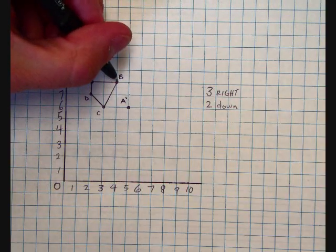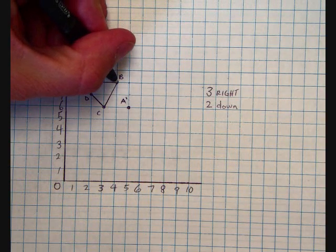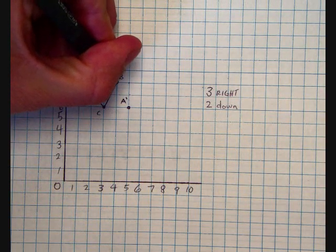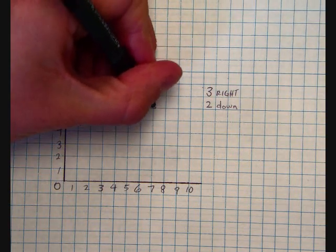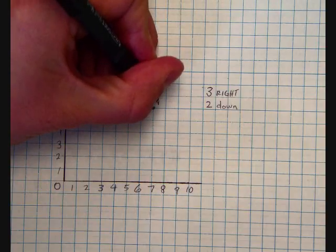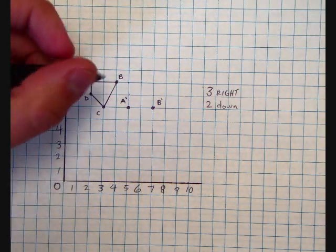Next, I'm going to do the same thing with my B point. I'm going to take my B and move it 3 spaces right and then 2 spaces down. 1, 2, 3, 1, 2. This is my new B point, and again I'll call this B prime to show that it's an image, not the original figure.